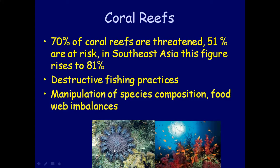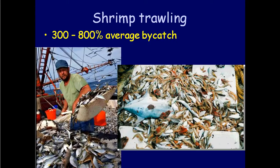For example, crown-of-thorns starfish feed on corals. In many areas, the large conchs and other organisms that prey on these starfish have been removed by fishing, allowing the crown-of-thorns starfish to proliferate and wipe out areas of coral reef.